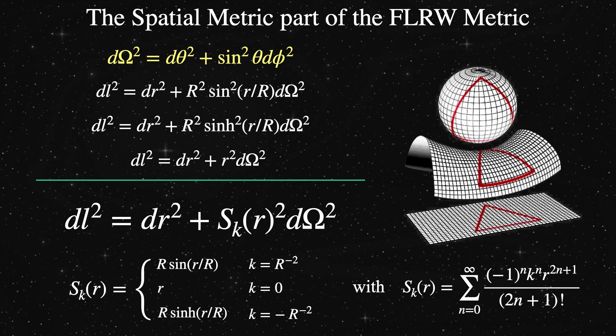They describe an embedding of a three-dimensional space in a four-dimensional space. These equations represent what's called a three-surface of a four-ball. That is to say, it's a three-dimensional surface with some constant curvature embedded in a flat four-dimensional hyperspace.